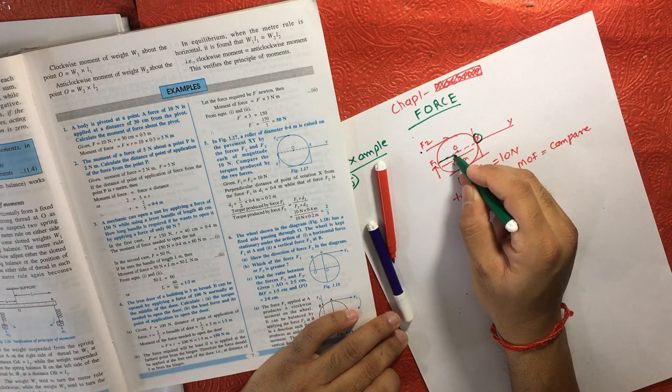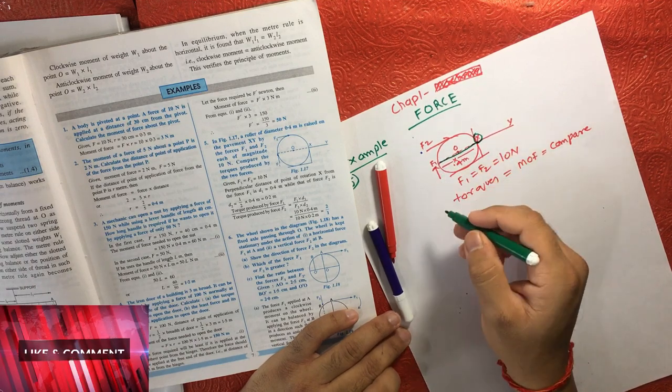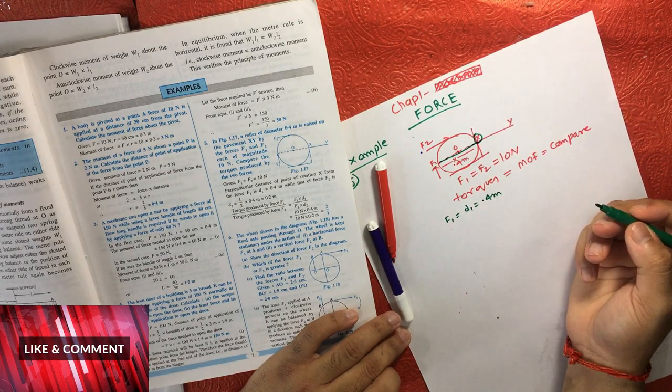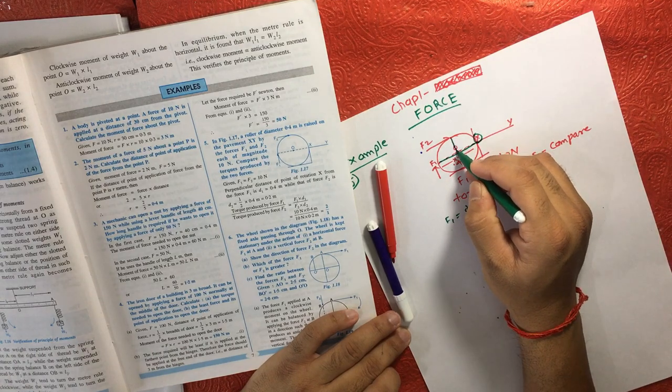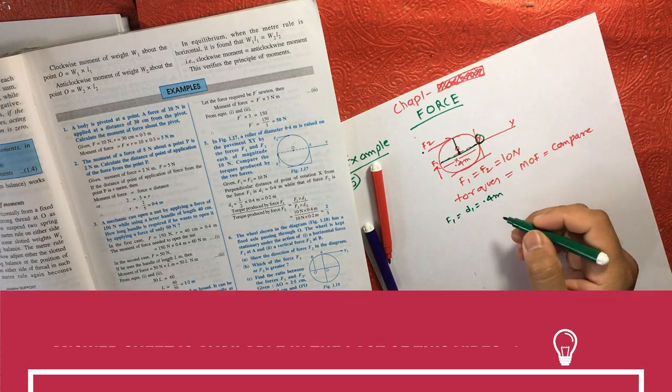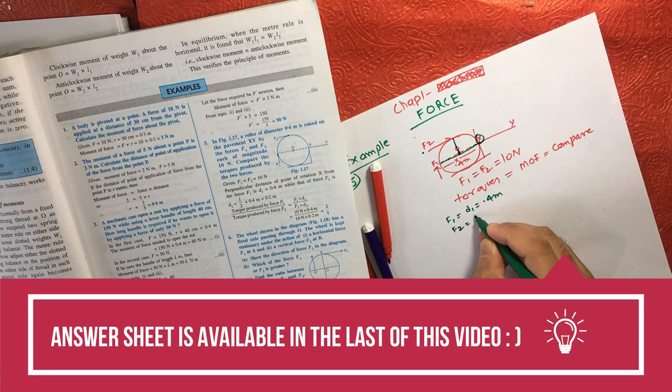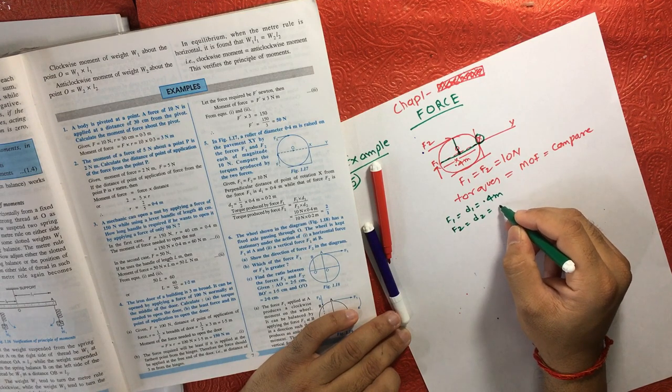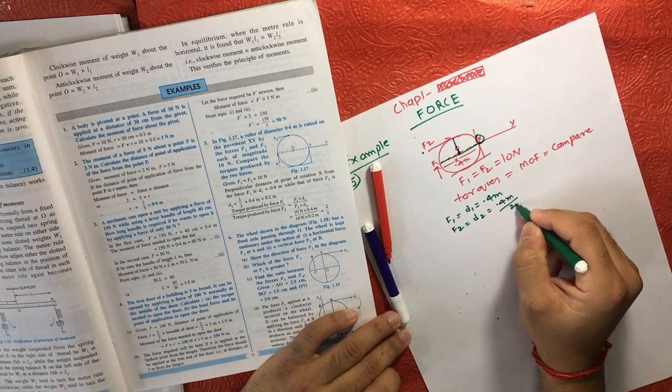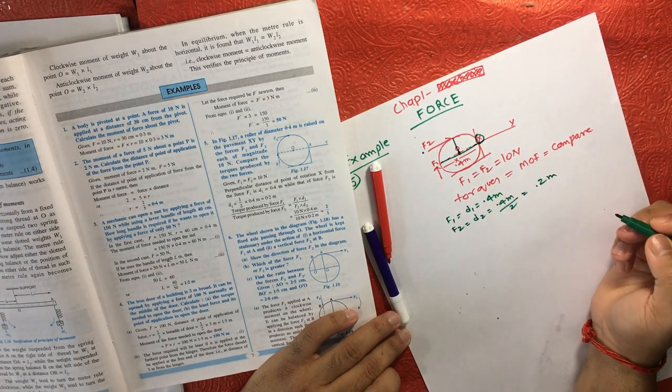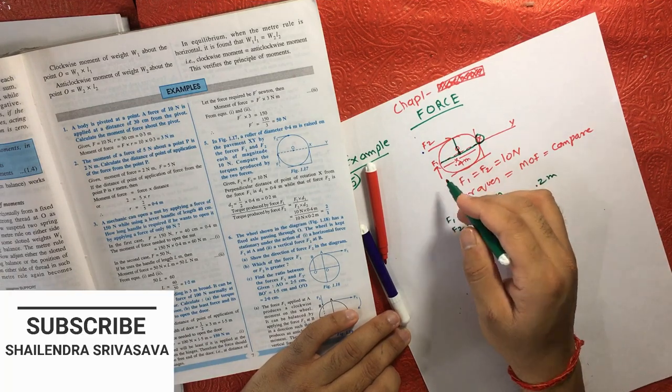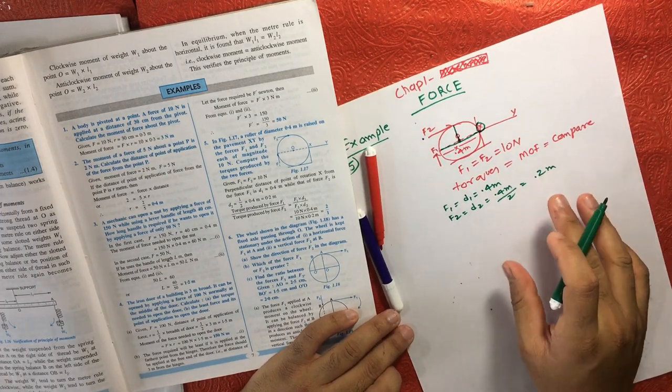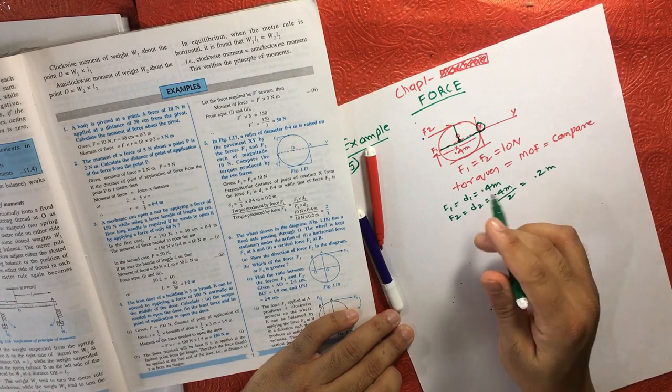However, in case of F2, this is half of the diameter. So in F2, the distance will be half of the diameter, which is 0.4 meter divided by 2, and that is 0.2 meter. So the only difference when I'm applying the same force is the location—the point where I'm applying that force.